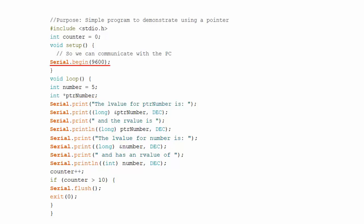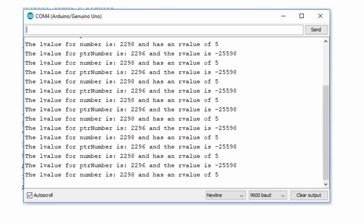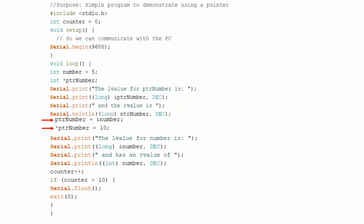These lines print the output on serial monitor. This is the output of this program. Note that this is the l value or memory address of variable number, and this is its r value. This is the l value of pointer variable and this is its r value. Note that this r value is garbage. If it was initialized to null, then its r value would be 0.